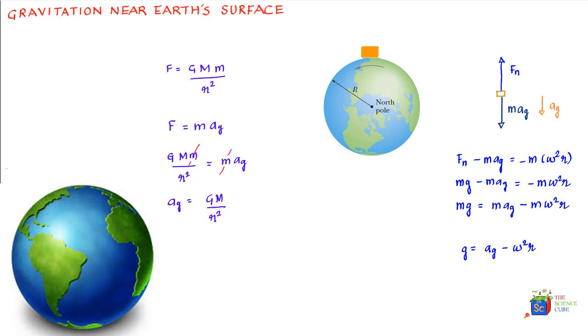In fact, for equator, the difference between g and ag can be calculated by putting r equal to 6.37 into 10 to the power 6 meters and omega equal to 2 pi r upon 24, which is nothing but the circumference divided by the time taken to cover the circumference, which we know is 24 hours. And what you'll find is that the difference comes out to 0.034 meters per second square.